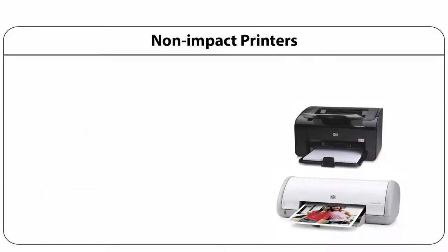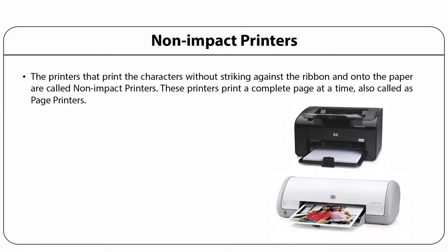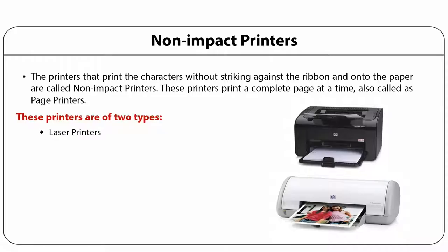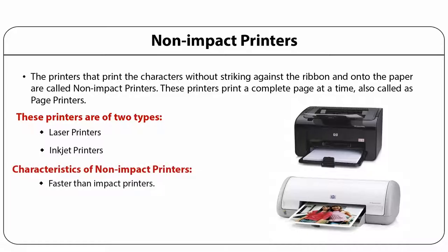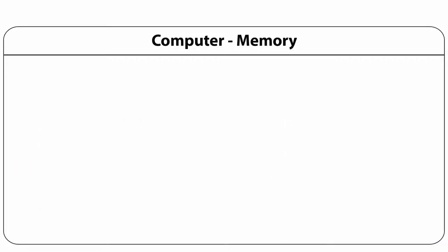Non-impact printers print characters without striking against the ribbon or onto the paper. These printers print a complete page at a time and are also called page printers. Laser printers and inkjet printers belong to this category. The main characteristics of non-impact printers are that they are very fast, very less noisy, the quality of print is very high, and the size of the printer is also very small.